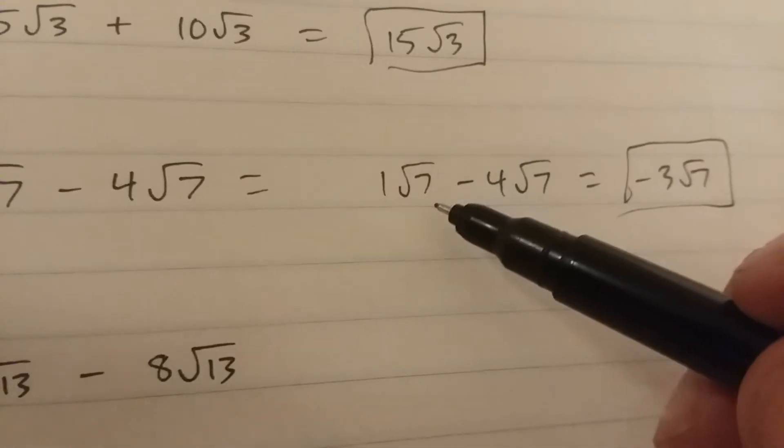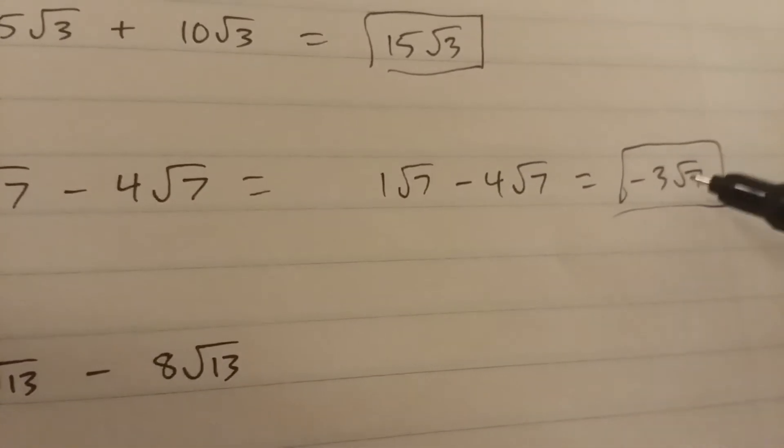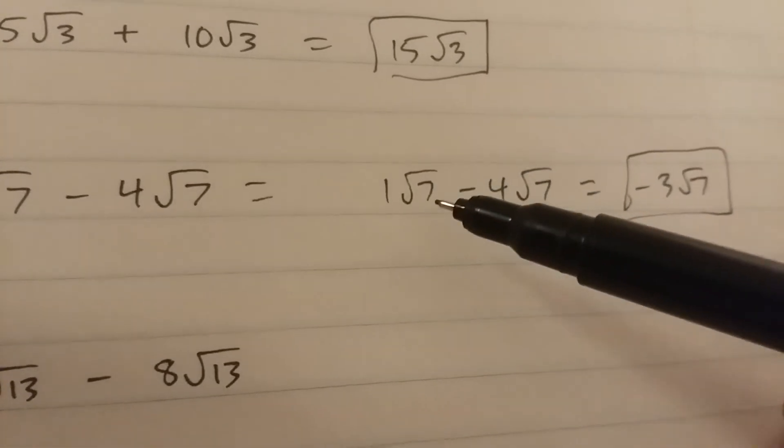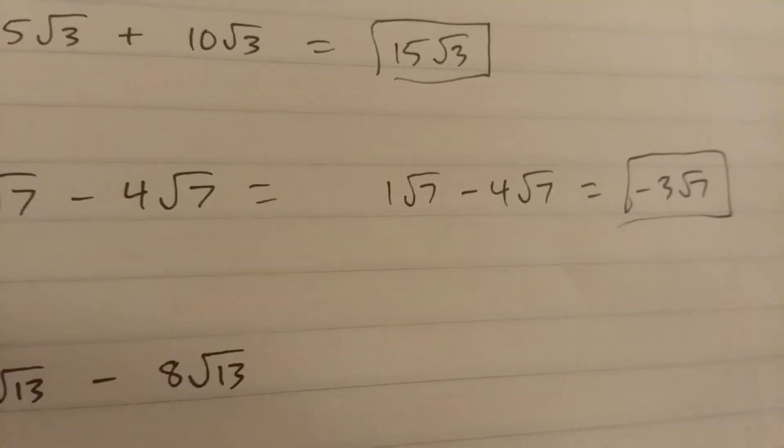So it's like 1x minus 4x. Negative 3x. Or, in this case, 1 root 7 minus 4 root 7 is negative 3 root 7.